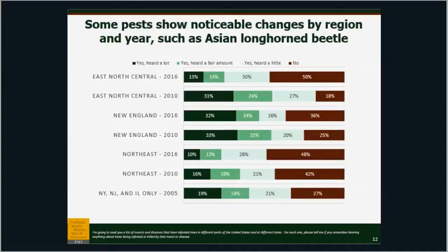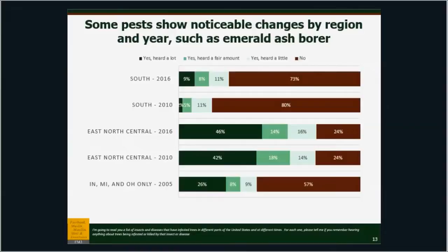Let's look at emerald ash borer. Emerald ash borer is now on the radar of the southern quarter of the United States — this is a huge change from 2010, where basically a couple people said they'd heard a little bit about it. By 2016, people are becoming much more aware in the southern region of the concept and name of the emerald ash borer. Outreach is reaching those people as the outbreak moves into their region.